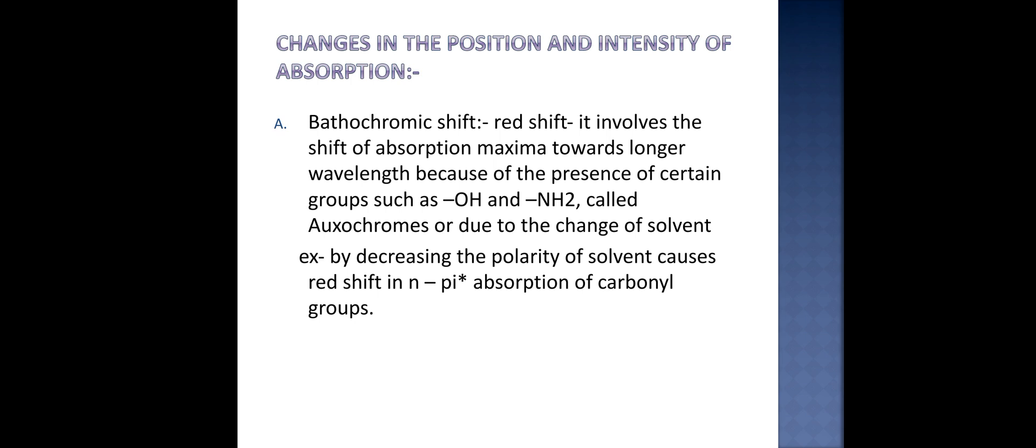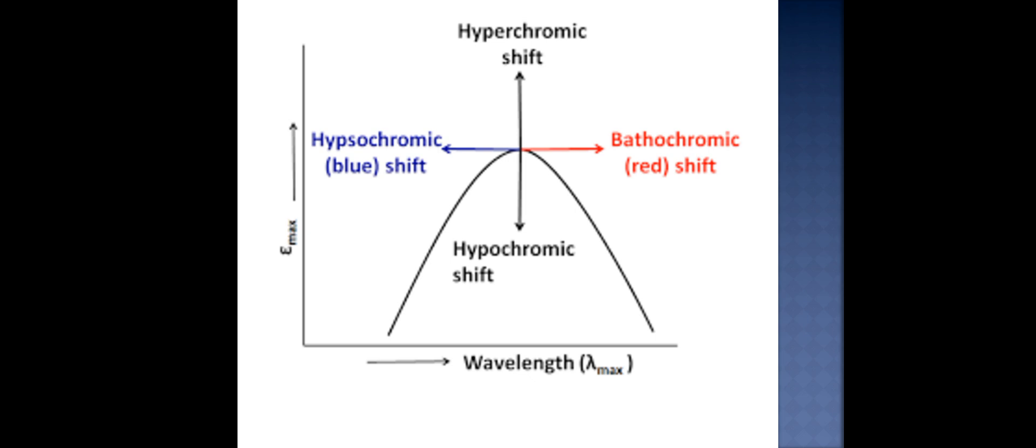Example includes decreasing the polarity of the solvent causes red shift in n to π* antibonding orbital absorption of carbonyl groups. From the diagram you will understand very easily.